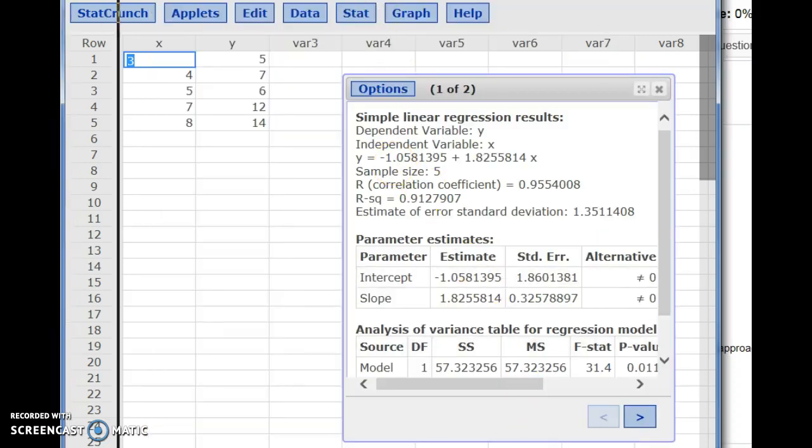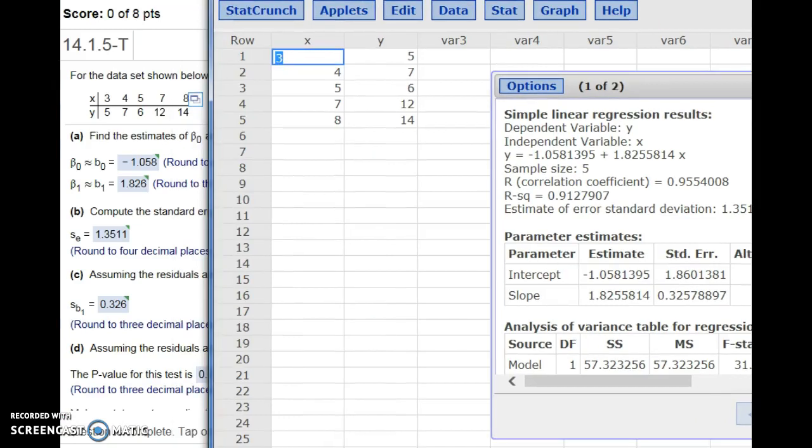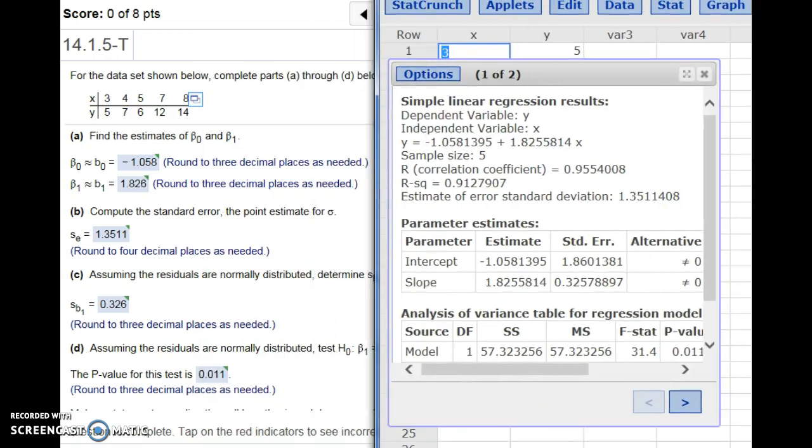Let's move this over so we can see the problem. Right up here in our output, we get the equation. This is the regression equation. The number that's not by x is our beta sub zero, and the number multiplied by x is beta sub one.